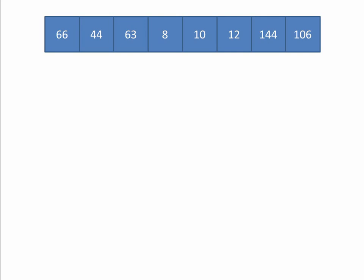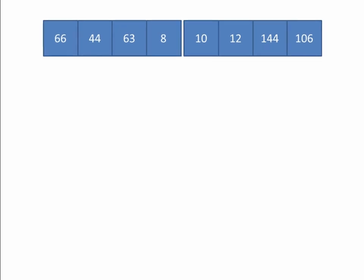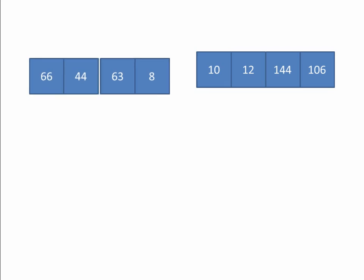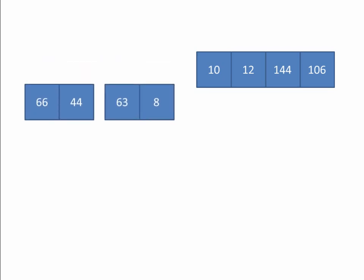I'm going to do that again, but I'm going to take a slightly different approach. I'm going to focus on one side of the list at a time. Here's my original unordered list. I'm going to split it in half, just like I did before. And then I'm going to split the left-hand side in half, just like I did before. But now I'm going to concentrate on the left-hand side.